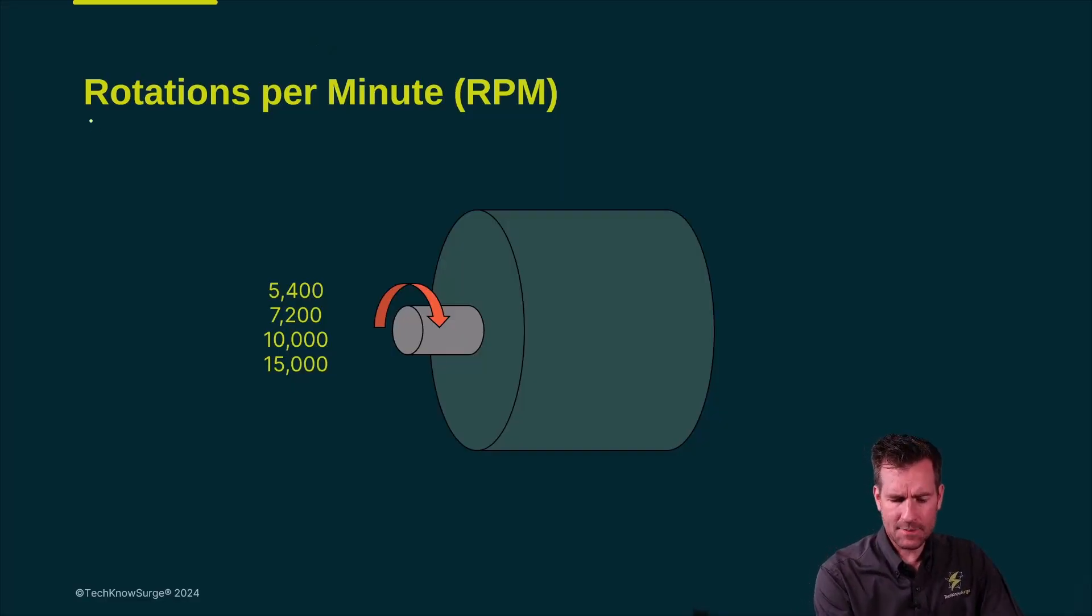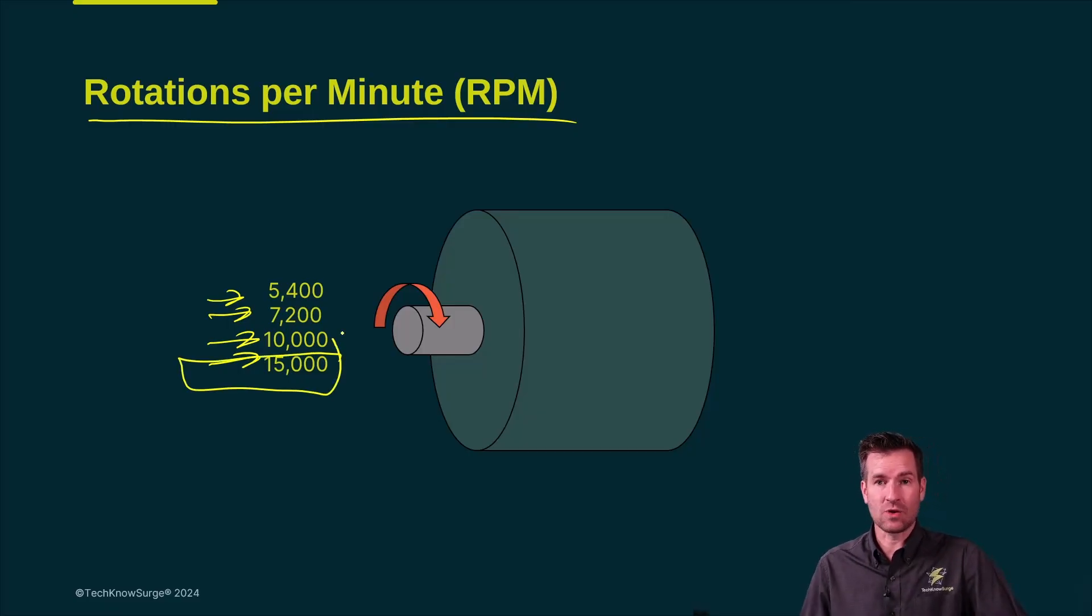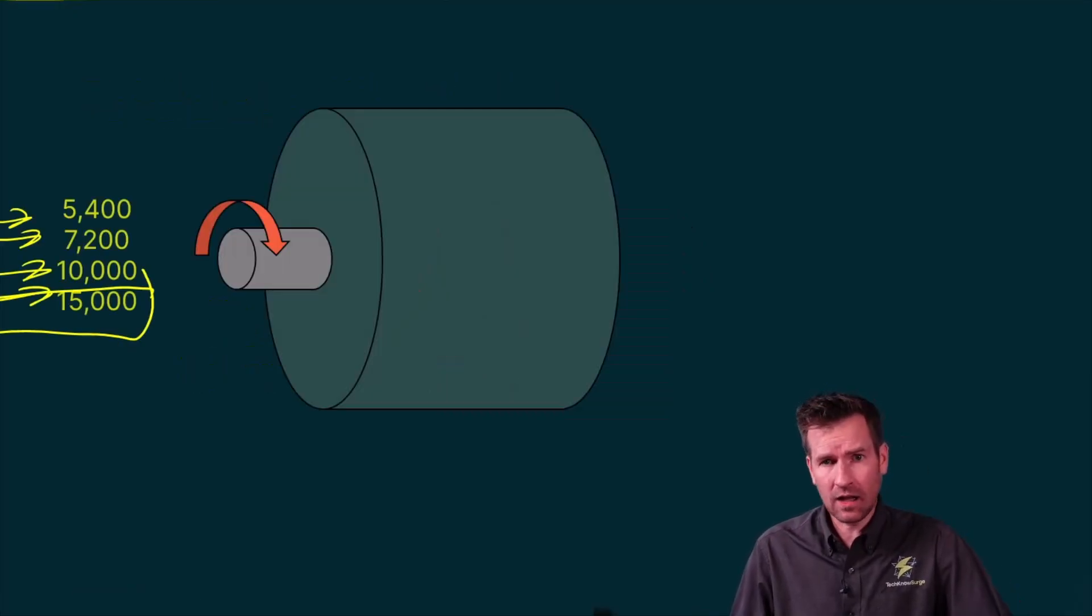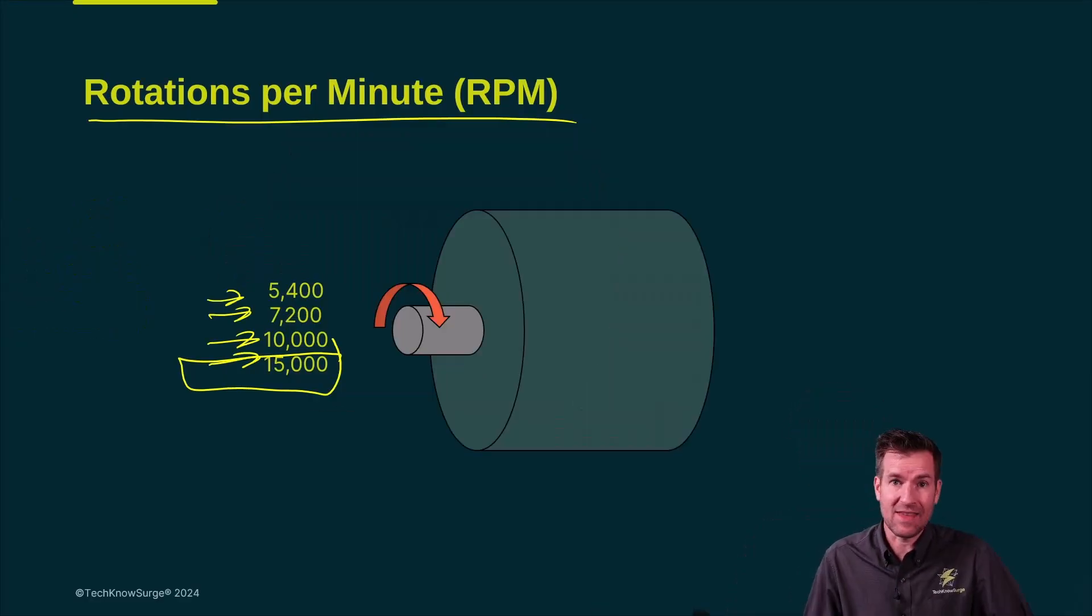So there's a few different options we have when it comes to rotations per minute. We have 5400, 7200, 10,000 and 15,000. And so one of the things we know that 15,000 would mean that the drive we could actually read data faster. So why wouldn't we all always go with 15,000? And the answer to that is just cost. This 5400 is quite a bit cheaper and would work if we're just browsing the internet or doing some simple things.